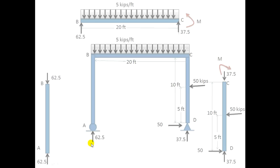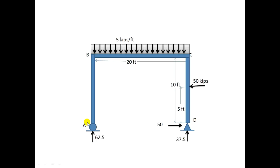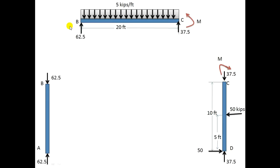Now I will separate the frame members to draw the SFD and BMD for each. At the roller (point B) there is no horizontal reaction and no moment acting as a reaction, so there will be no moment at B and no horizontal reaction at B. However, at D the horizontal reaction is acting, so a moment will develop and be transferred from D up to C.